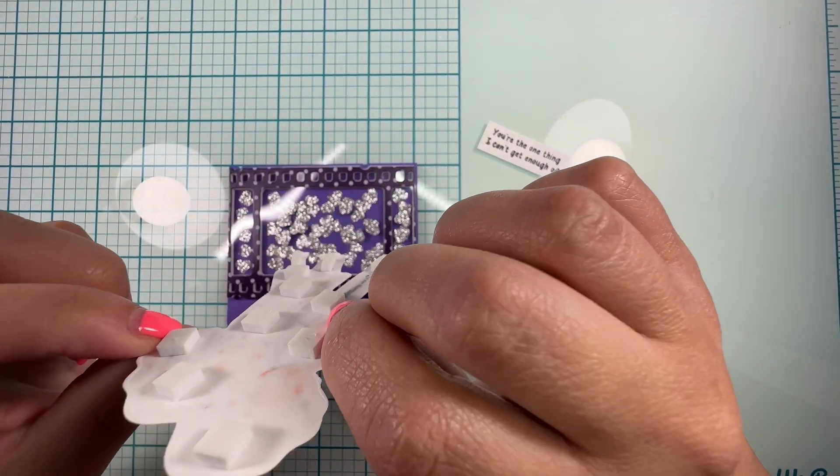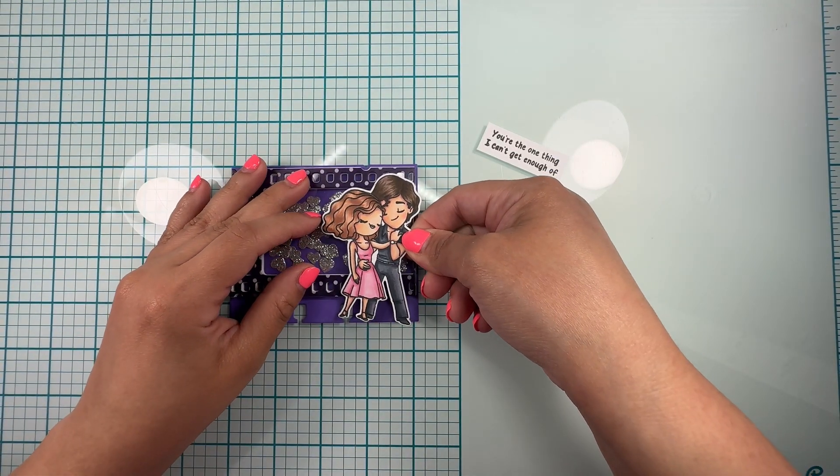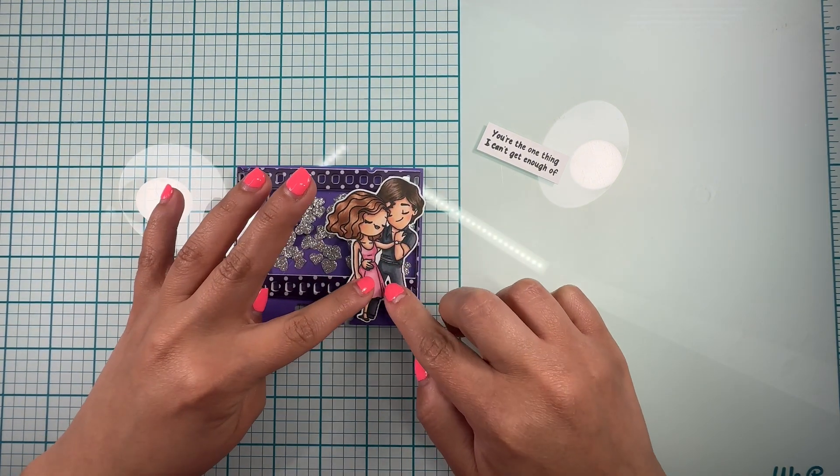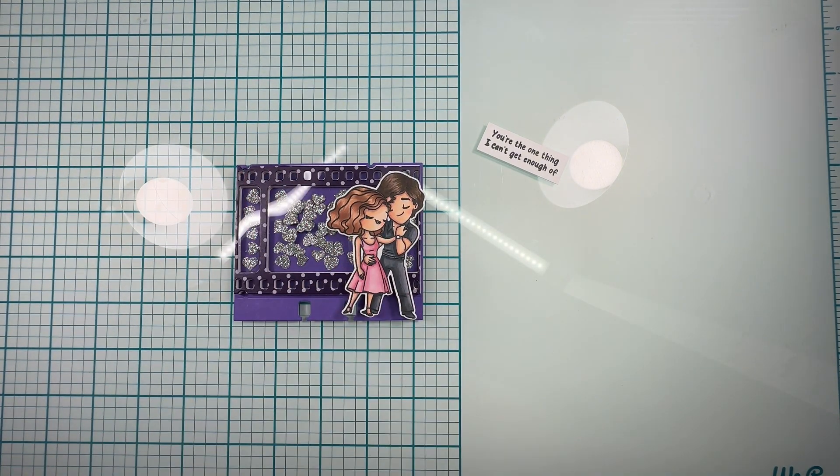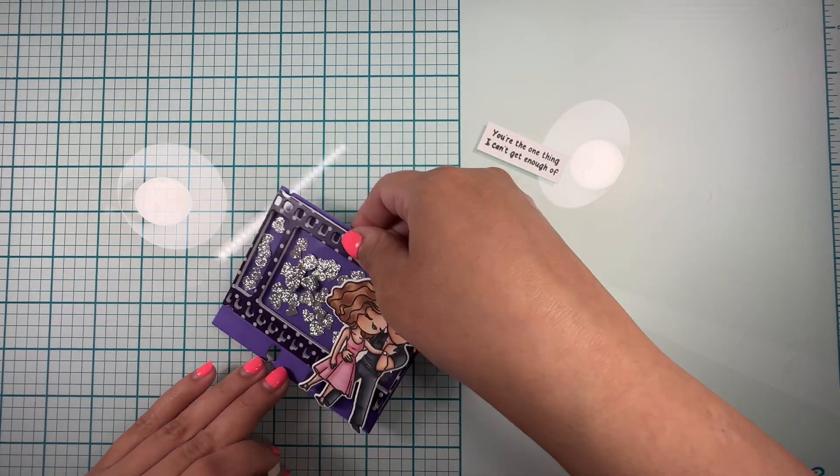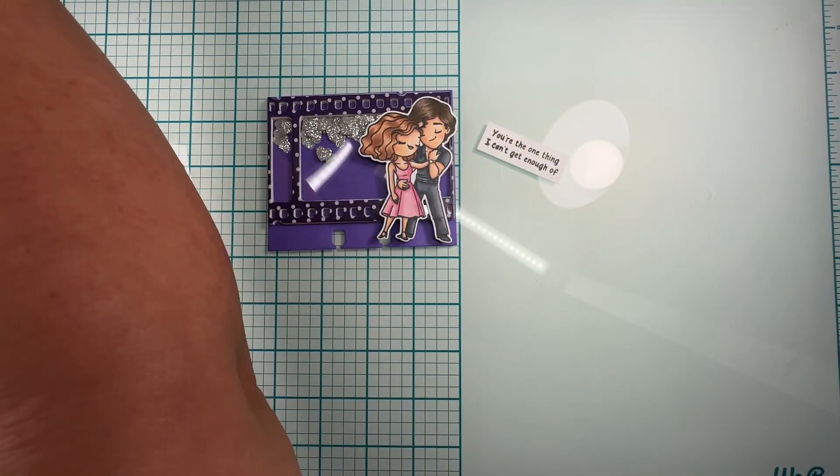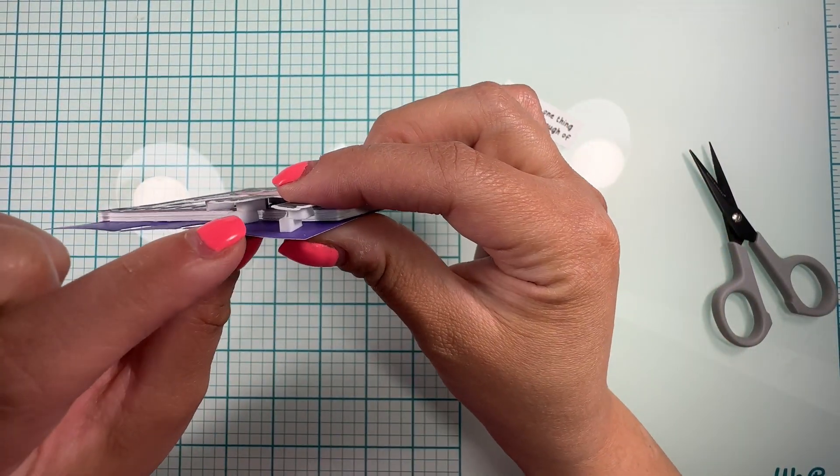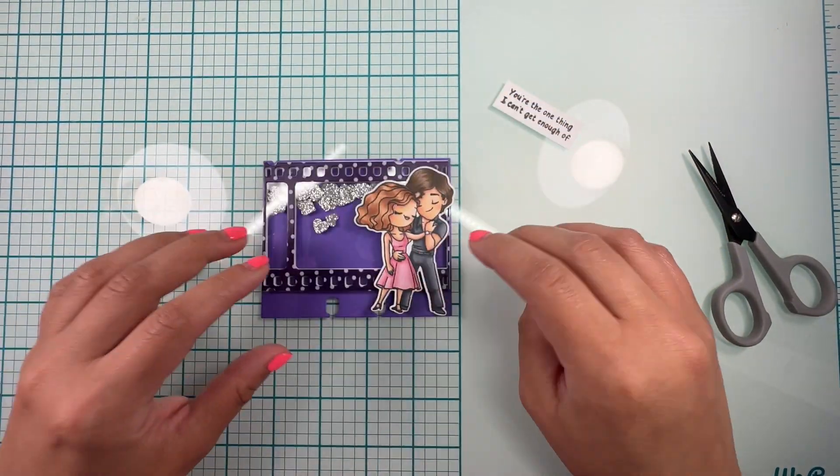And then I'm gonna use my outline die to cut them out and come back and show you. And here they are, I have added some foam tape to them, but then when I added these here I noticed that their feet was not going all the way down to my cardstock, so I just added a little extra piece of foam tape there.